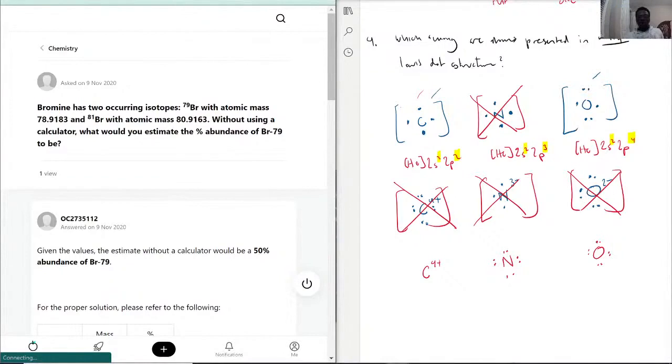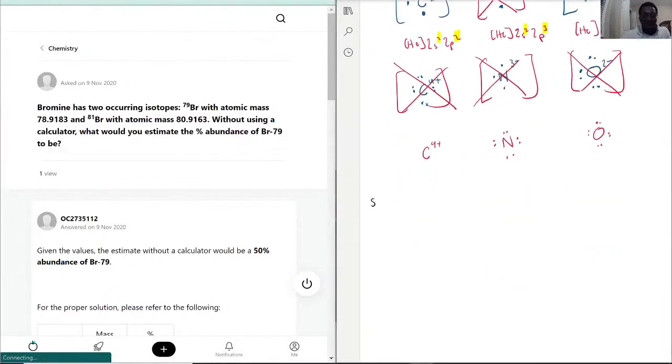So question five is asking, bromide has two isotopes.